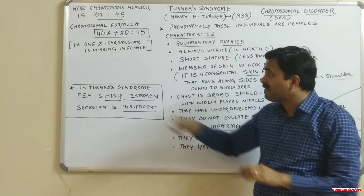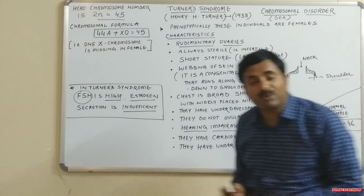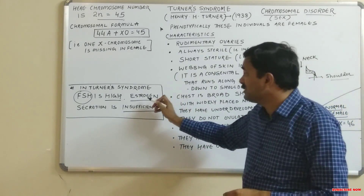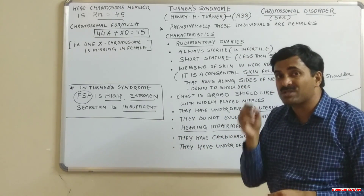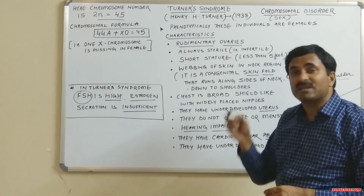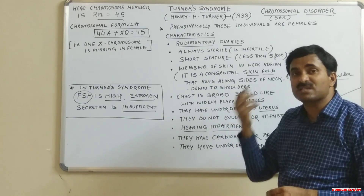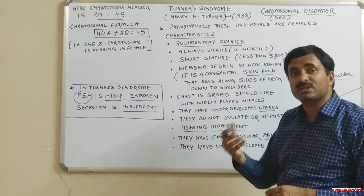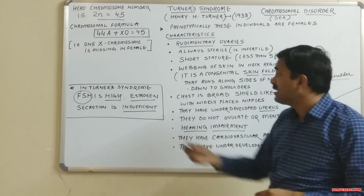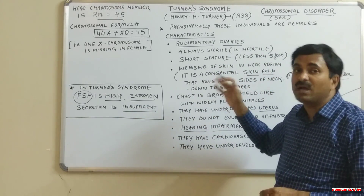Regarding hormone levels, Turner syndrome females have high FSH (follicle-stimulating hormone) levels. However, their estrogen secretion is insufficient. Estrogen is very important for the development of secondary sexual characteristics and the menstrual cycle, so insufficient estrogen has a significant impact on these females, as reflected in their characteristics.